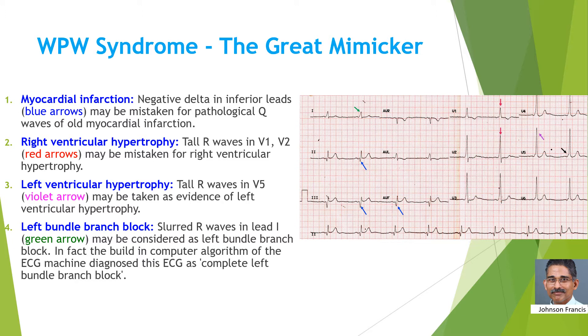Right ventricular hypertrophy may be suspected because of tall R waves in V1 and V2. Similarly, tall R waves in V5 may be taken as left ventricular hypertrophy.